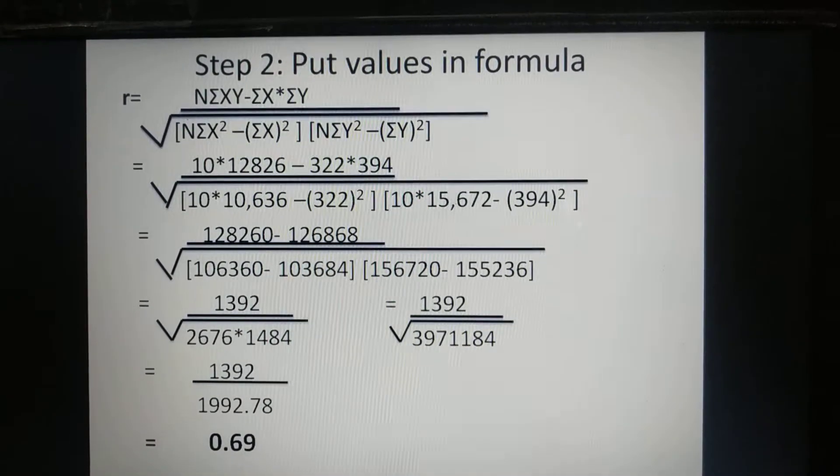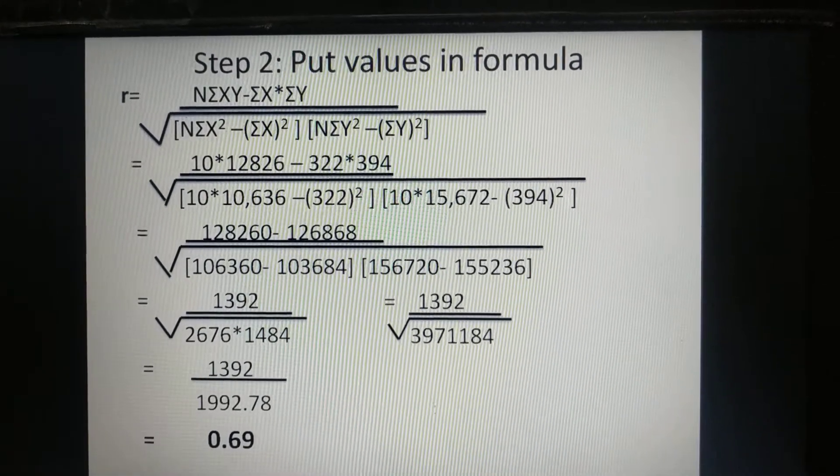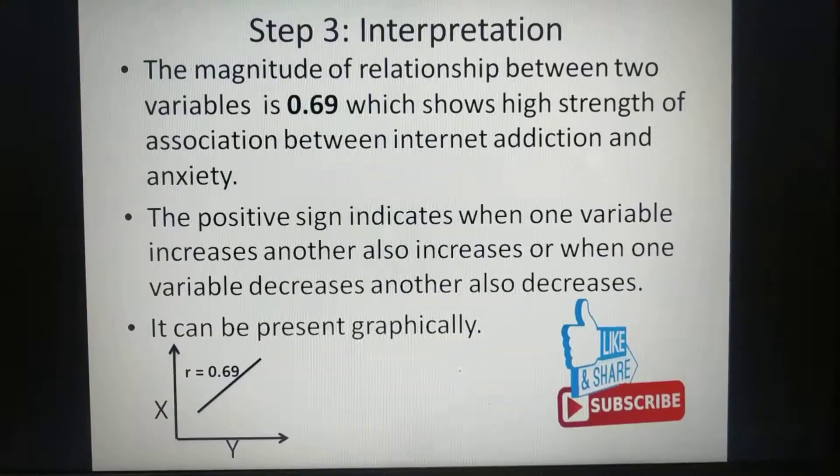The last step we divide 1392 by 1992.78. And the R value comes plus 0.69. This is our final value.